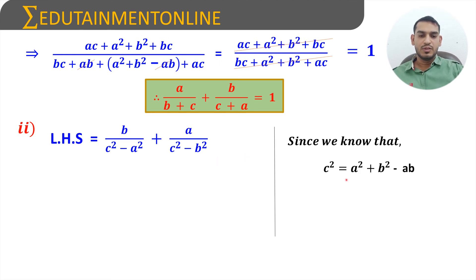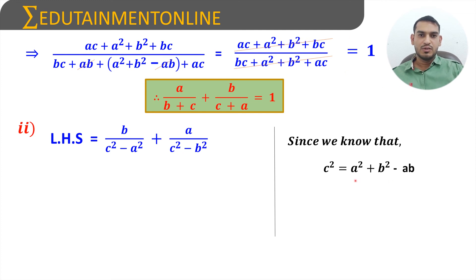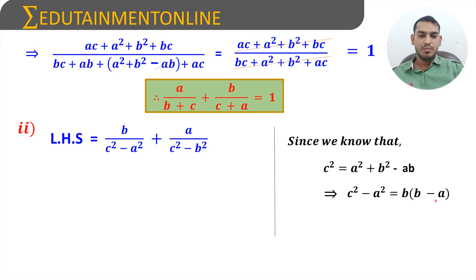From the cosine rule, since cos C = cos 60° = 1/2, we again get c² = a² + b² - ab. Transposing a² to the left-hand side: c² - a² = b² - ab. Taking b as common, c² - a² = b(b - a).